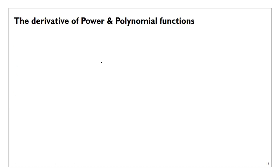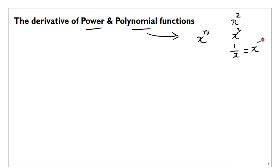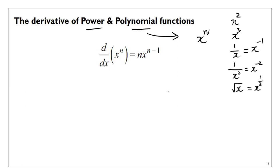The derivative of power and polynomial functions — keep in mind these are anything in the form of x to the power of n. That includes parabolas like x squared, cubics, hyperbolas which is 1 over x written as x to the power of negative 1, truncus which is x to the power of negative 2, and square root functions like x to the power of a half. Any rule that can be written as x to the power of n for n being a rational number applies to this formula: d/dx of x to the power of n equals n times x to the power of n minus 1.